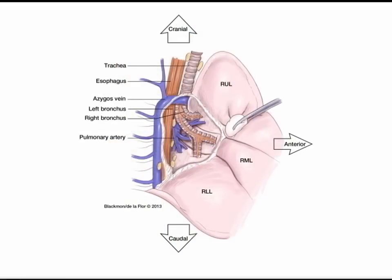Prior to beginning any right-sided lung resection, you will want to begin by performing a mediastinal lymph node dissection. After this has been performed, retract the lung anteriorly, providing a posterior exposure of the pleural surface. You can begin by incising the pleura along the pathway of the azygous vein, taking care not to damage the vagus nerve running longitudinally next to the esophagus.